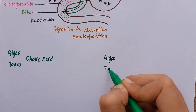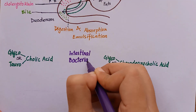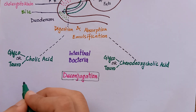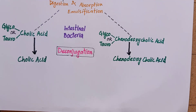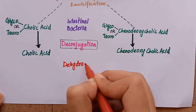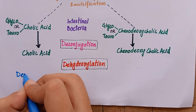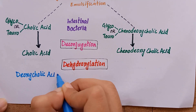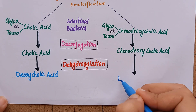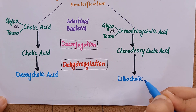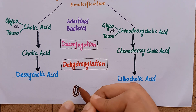The bacteria in the intestine can remove glycine and taurine from bile salts by the process of deconjugation to regenerate bile acids. They can also convert some of the primary bile acids into secondary bile acids by removing a hydroxyl group, producing deoxycholic acid from cholic acid and lithocholic acid from chenodeoxycholic acid by the process of dehydroxylation.